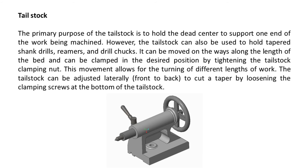Tailstock. The primary purpose of the tailstock is to hold the dead center, to support one end of the work being machined. The tailstock can also be used to hold tapered shank drills, reamers, and drill chucks. It can be moved on the ways along the length of the bed, and can be clamped in the desired position by tightening the tailstock clamping nut. This movement allows for the turning of different lengths of work.